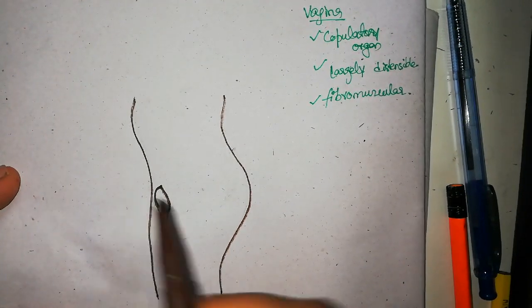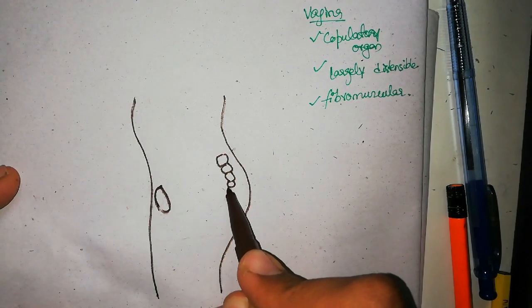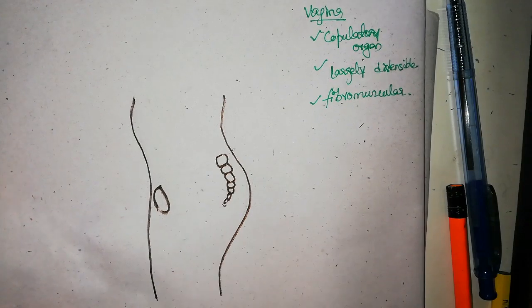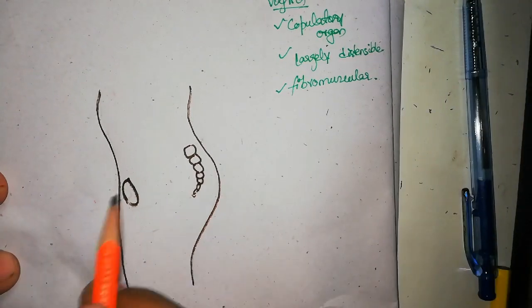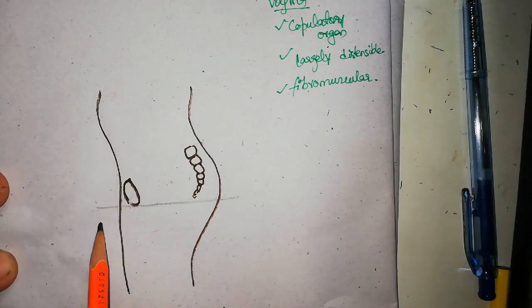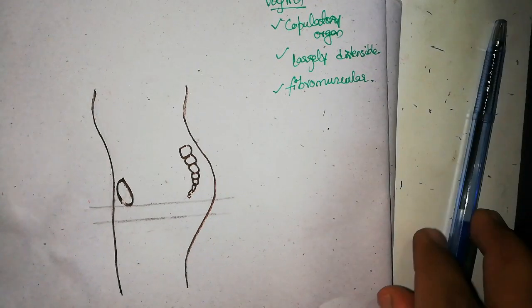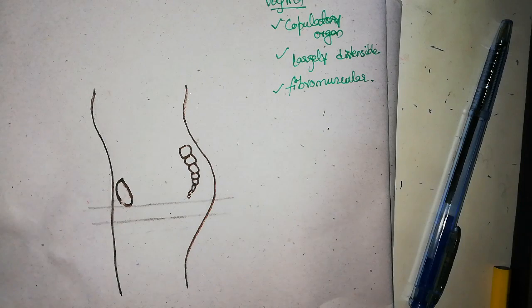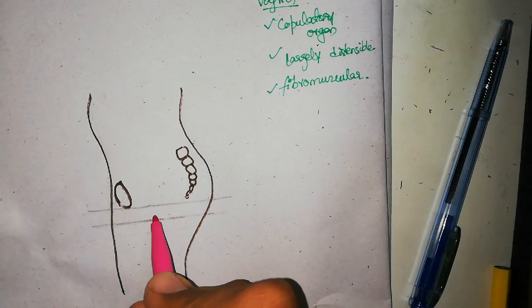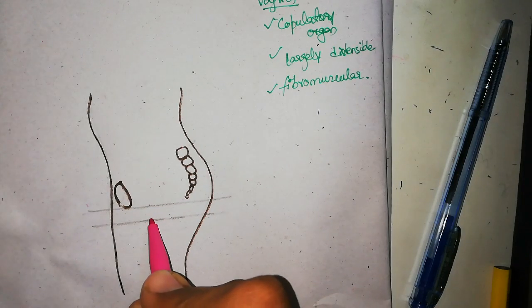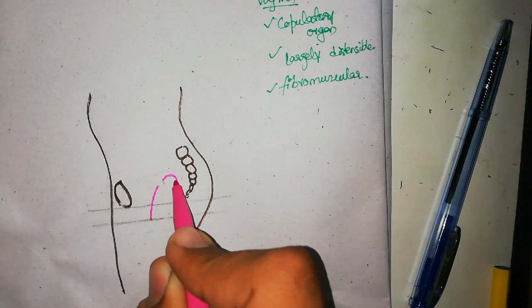Right here, let's imagine, is the symphysis pubis. Here is her sacrum and then the coccyx. So her pelvic outlet would be about right here and her perineum would be about here. So if we talk about the vagina, it is in this position.